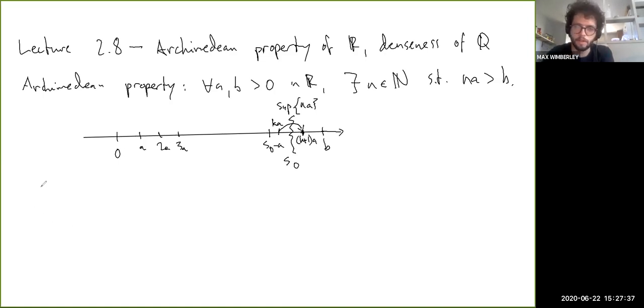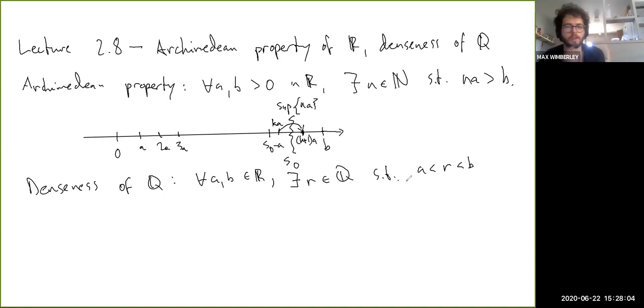So now for the denseness, I'll kind of draw a similar picture. Let me state it first. So for all A, B in R, there exists a rational number in Q such that A is less than R is less than B. So there's a rational number in between any two real numbers. That's what it's saying. So the way they approach this is they say, let's look at A and B and kind of consider the distance between them, which is B minus A in this case, since B is bigger than A.